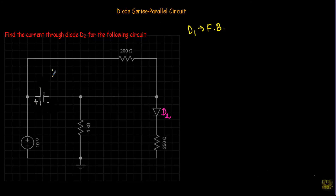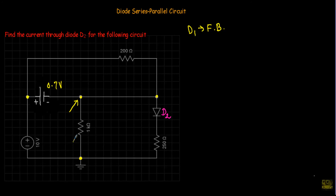I can replace diode D1 with a 0.7V source in the simplified equivalent circuit. The 10V is applied across the circuit, so some portion drops across diode D1 — the built-in potential of 0.7V — and the remaining 9.3V will be dropped across the 1kΩ resistor.